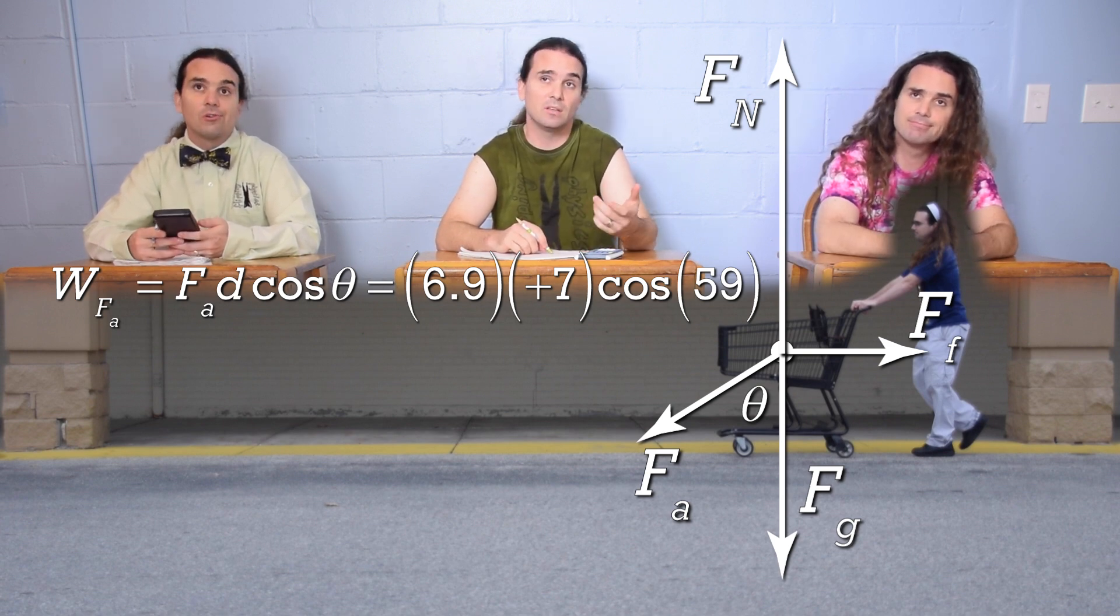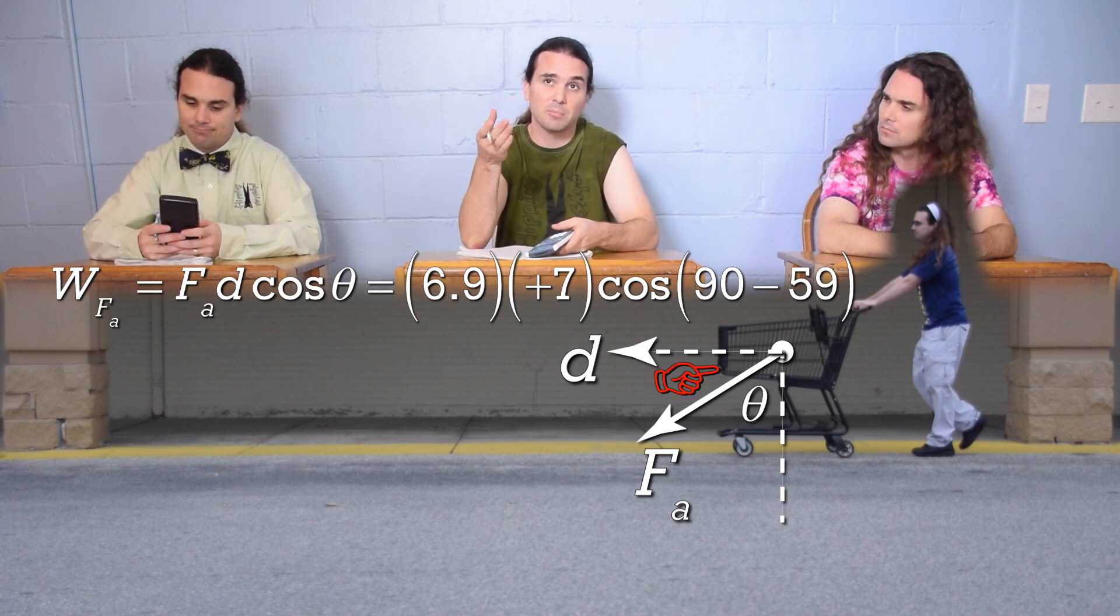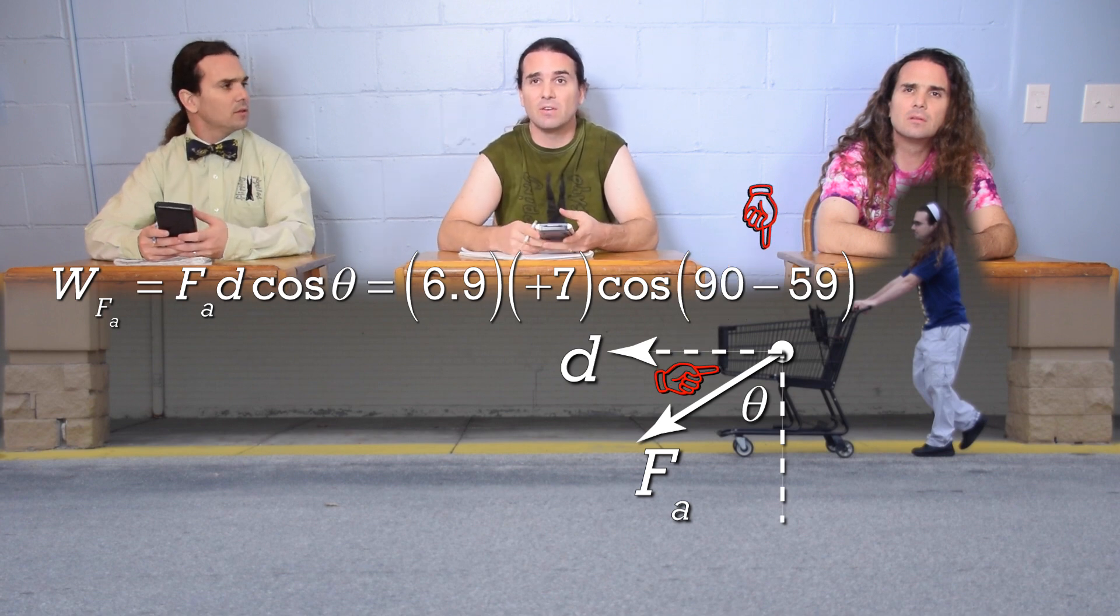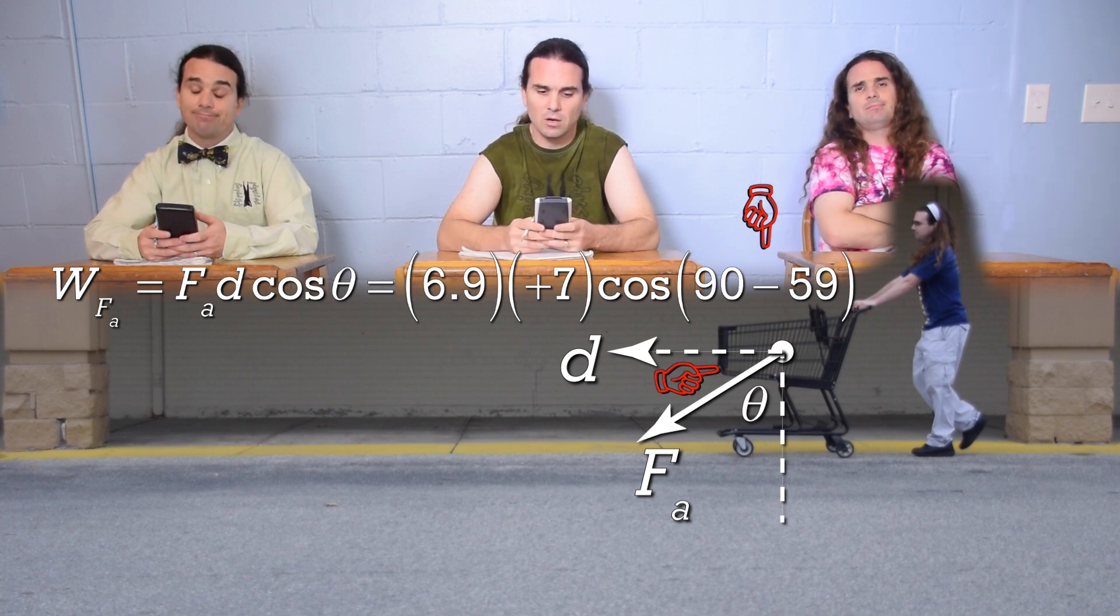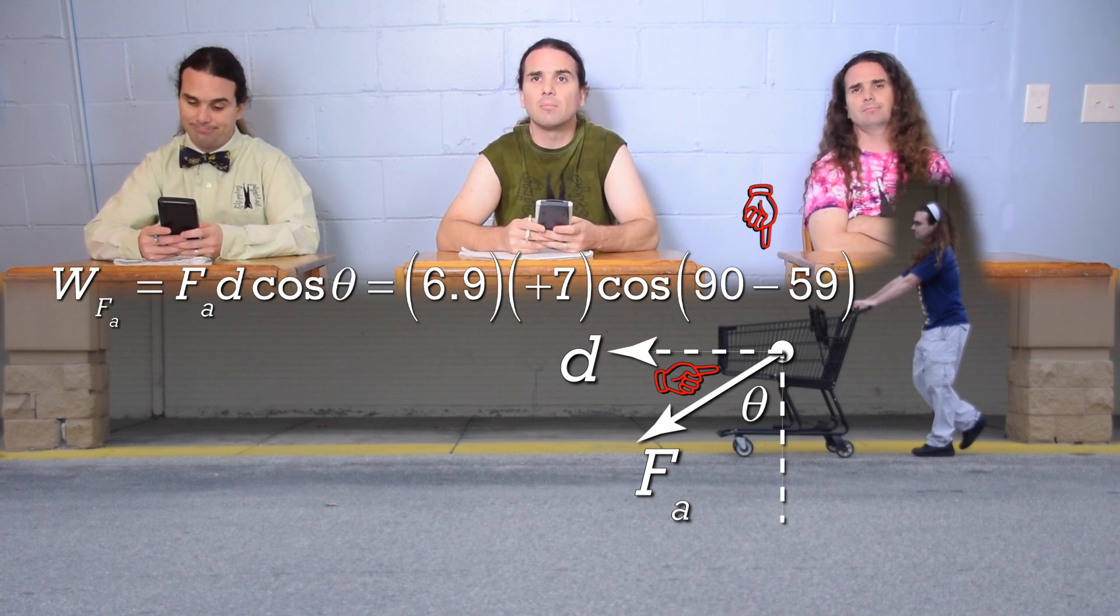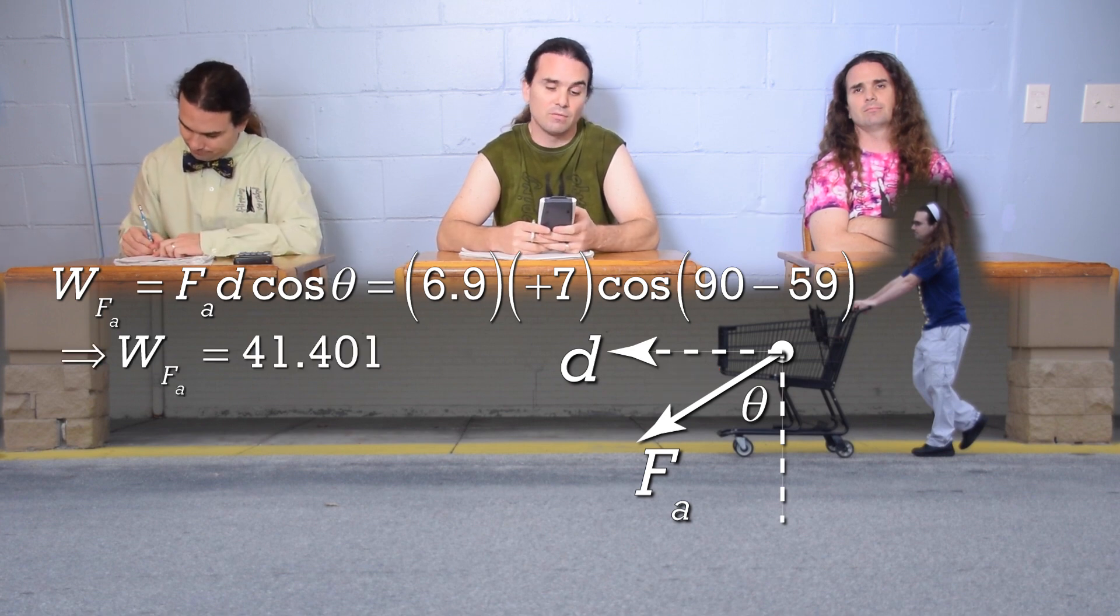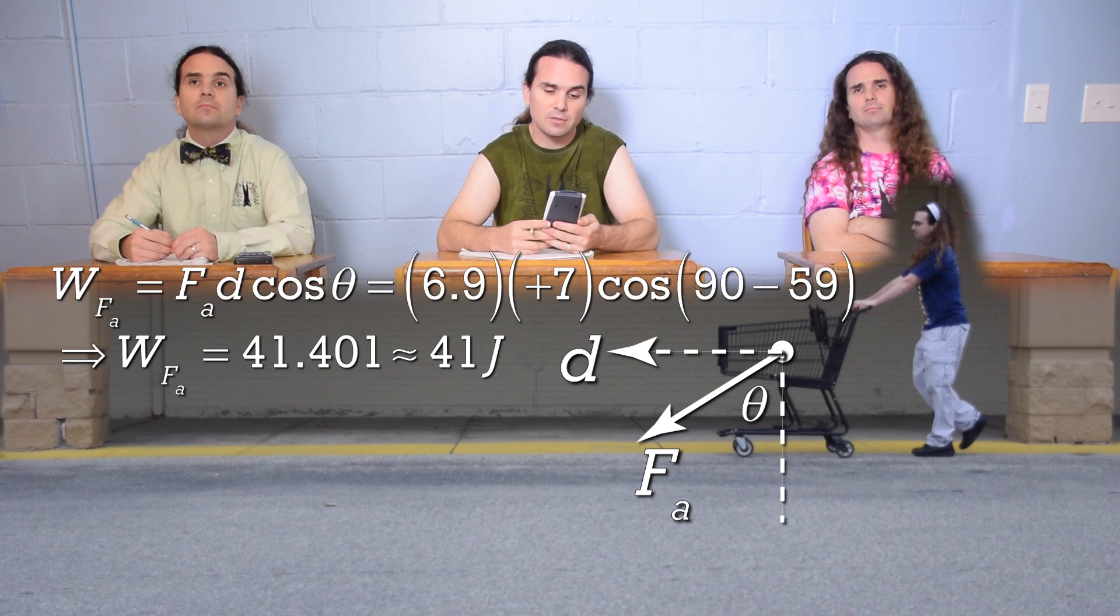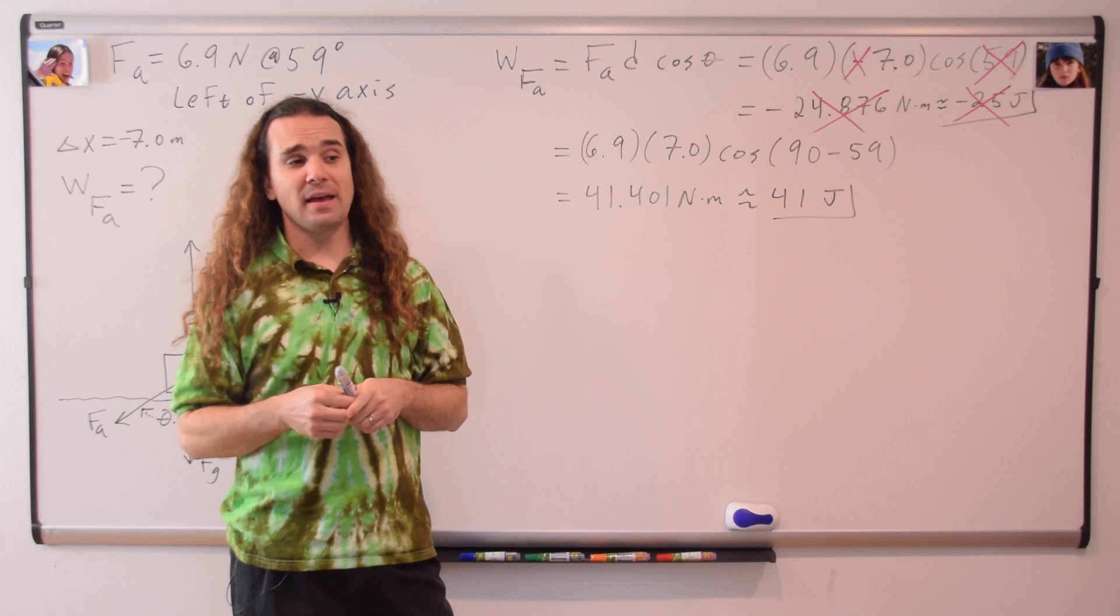Mr. P: Yeah, speaking of the angle, we use the wrong value. Theta is the angle between the direction of the force applied and the displacement of the cart, which is actually, in this case, 90 minus 59 degrees, or 31 degrees, which means the work done by the force applied is actually 41.401, or with two sig figs, 41 newtons, I'm sorry, 41 joules.